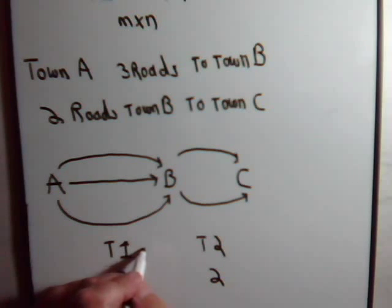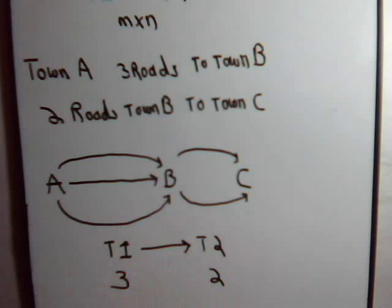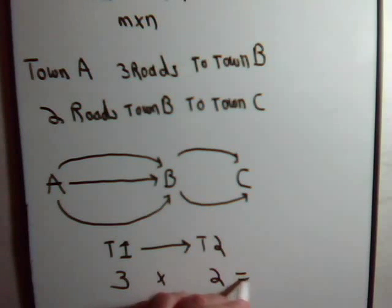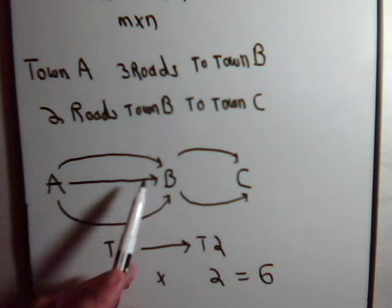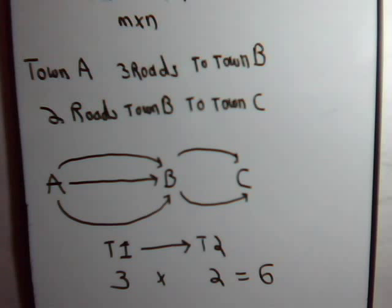So if we perform this one, then perform this one, the total number of ways that we can do it is six different ways, which we can see very easily from our diagram here. So that's just a real simple example of how the fundamental principle of counting works.